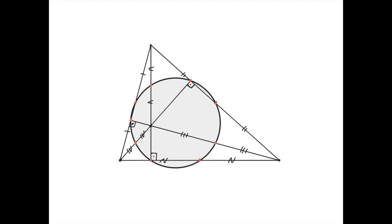This point here is the midpoint of the segment defined by this vertex and the orthocenter, so this length equals this length. This point is analogously defined as the midpoint of this segment, and this point is analogously defined as the midpoint of this segment. These three points also lie on the Euler circle. This point, this point, and this point are the midpoints of the sides of the triangle, and they also lie on the Euler circle.